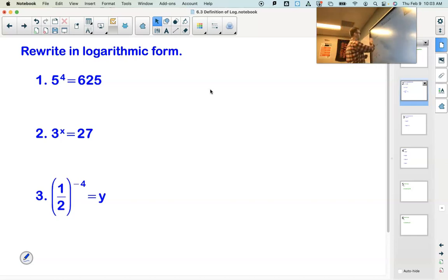I have 5 to the 4th equals 625. That's a true statement. I'm going to rewrite it as a logarithm. Log. What's the base of the logarithm? The base of the logarithm is the base of the exponential. Log base 5.